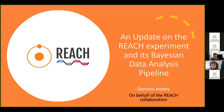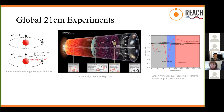REACH — the Radio Experiment for the Analysis of Cosmic Hydrogen — is a global 21-centimeter experiment. Neutral hydrogen has a hyperfine transition at 21 centimeters, the spin flip between the proton and the electron, which means neutral hydrogen in the universe can absorb from or emit into the cosmic radio background at that wavelength. The degree to which that happens is affected by astrophysical parameters like gas collisions, kinetic gas temperature, and the presence of Lyman-alpha radiation, among others.